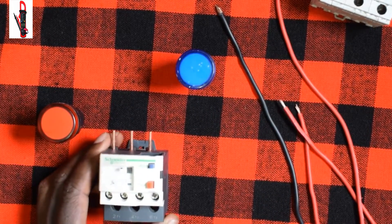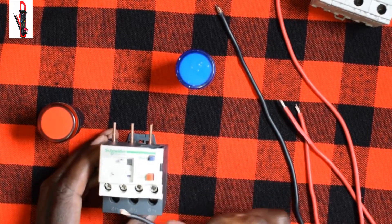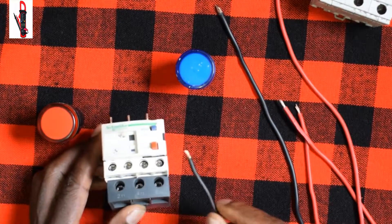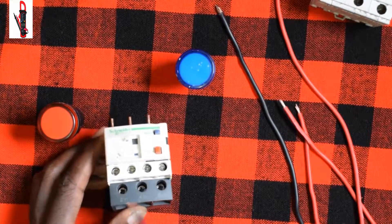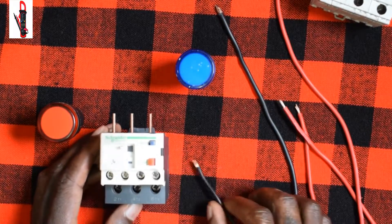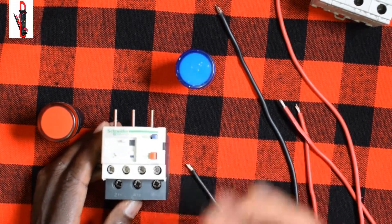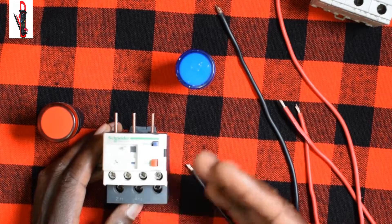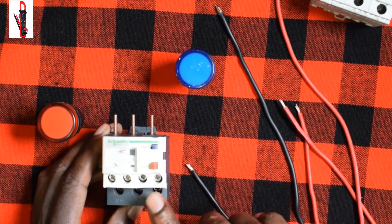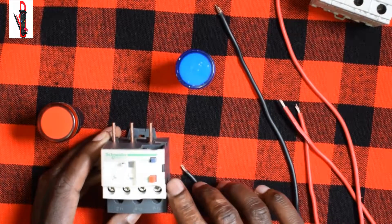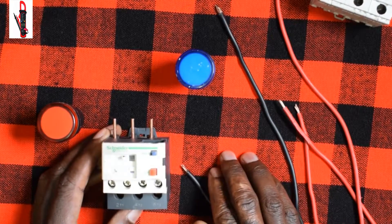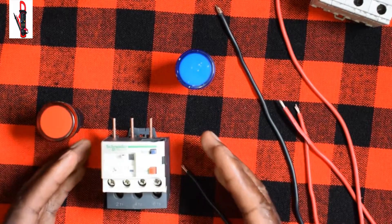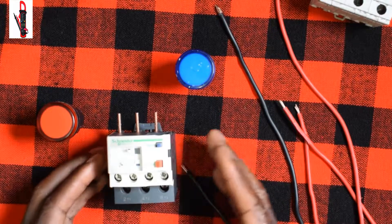First, this overload has some contacts here. You see there are two contacts: NC, that's normally closed, and NO, that's normally open. Initially when we are doing our direct online or we are incorporating an overload in our circuit, we always use the NC - that's the 96 and 95. We use it because if your load, which probably is a single phase or a three phase motor, has a short circuit or the windings are burning, it tends to draw more current.